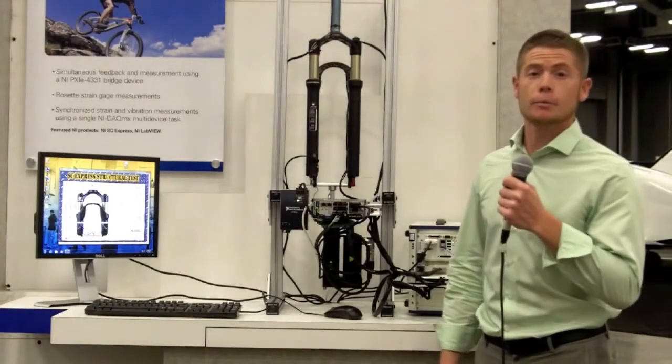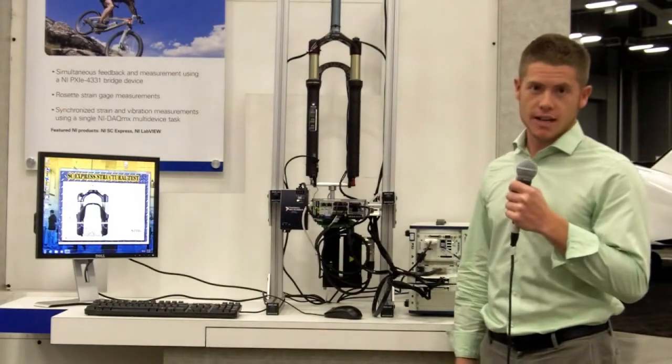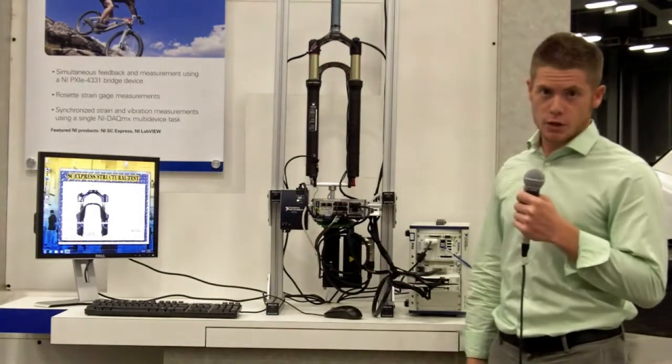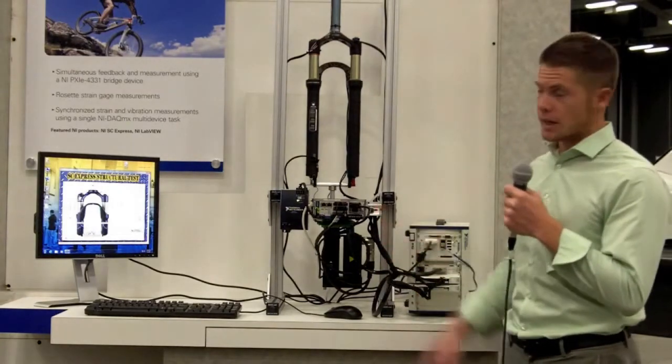My name is Shea Clymer. I'm the Product Group Manager for Structural and Physical Tests. And today we're going to look at a measurement system for closed loop control of a bike fork.